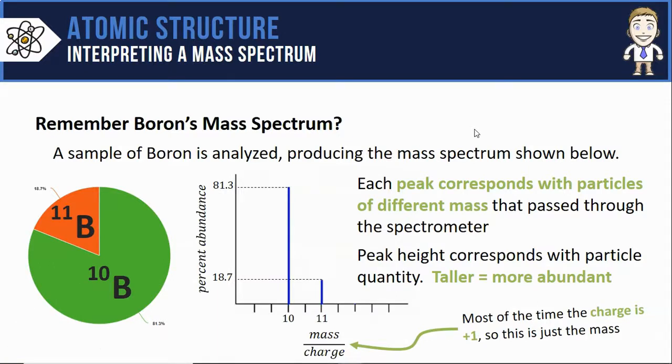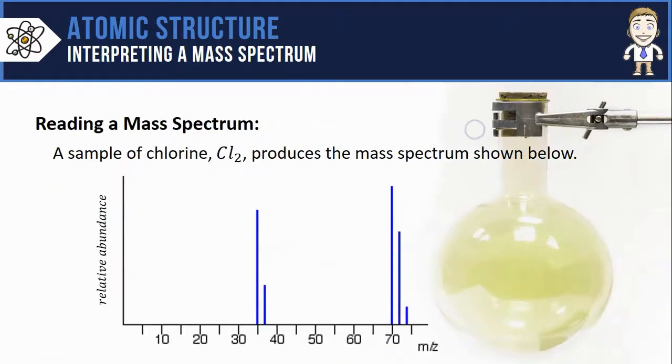In this video we're going to interpret a second mass spectrum, this time a slightly more complex example. Here we're talking about a sample of chlorine gas, that's Cl2. If you put chlorine gas through a mass spectrometer, it's going to produce something like the mass spectrum shown below. Right away you'll notice it seems a little bit more complex. I have five distinct separate peaks that we have to explain and account for.